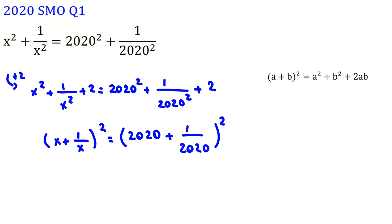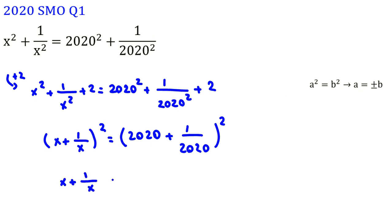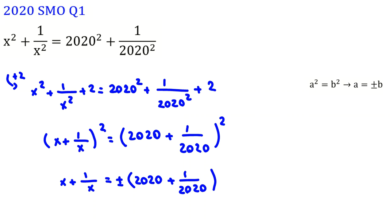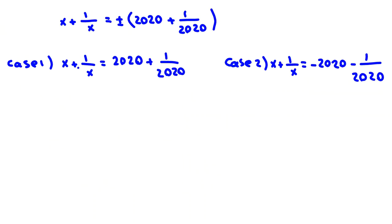Now when we have a squared equal to b squared, we can conclude a equals plus or minus b. So we conclude x plus 1 over x equals plus or minus 2020 plus 1 over 2020. We have two cases: Case 1 where x plus 1 over x is the positive value, and Case 2 where it is the negative value.